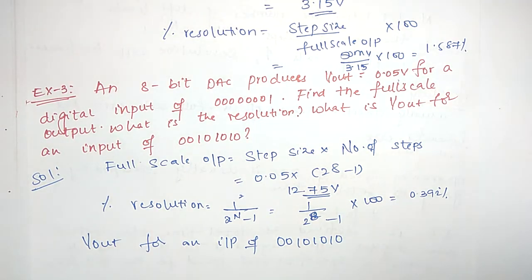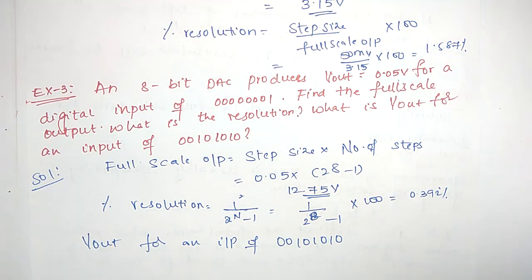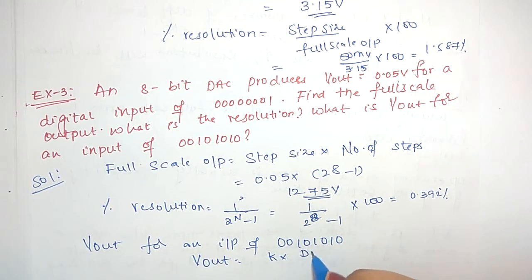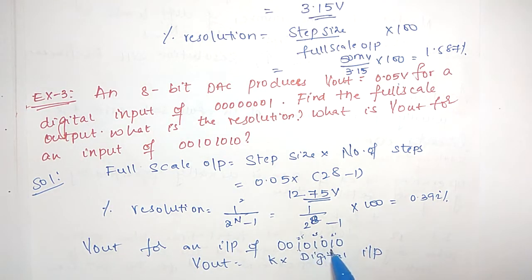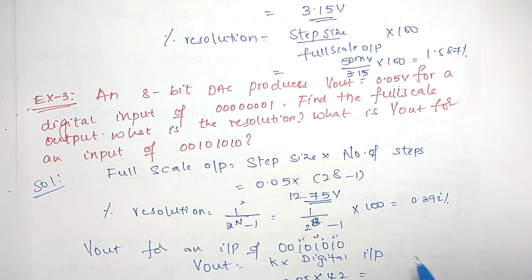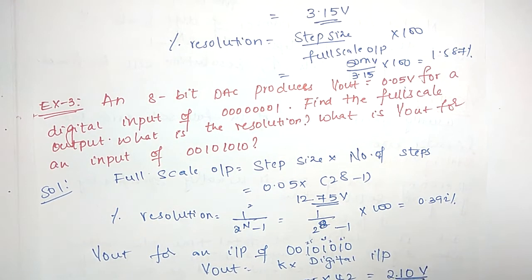For a DAC converter, the analog output Vout equals k multiplied by the digital input, where k is the step size. So Vout equals 0.05 multiplied by the decimal value of 00101010. The decimal representation is 2 power 5 plus 2 power 3 plus 2 power 1, which is 32 plus 8 plus 2 equals 42. Therefore Vout equals 0.05 into 42, which is 2.10 volts.